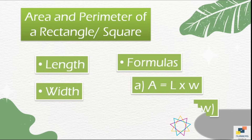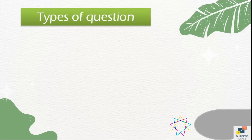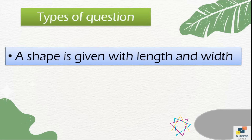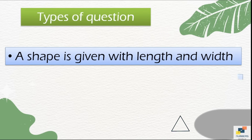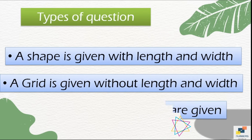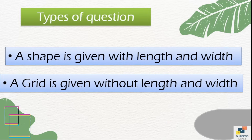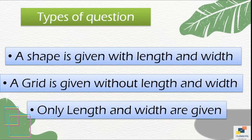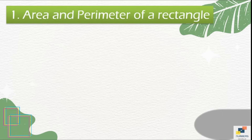To calculate area and perimeter we should know the length, width, and the formulas. You may see three types of questions in an assessment. In the first type, a shape is given with length and width. In the second type, a grid is given but no length and width is shown. In the third type, only length and width are given but no shape.